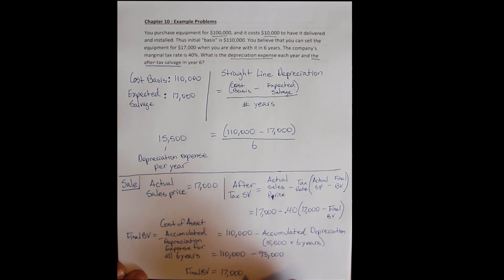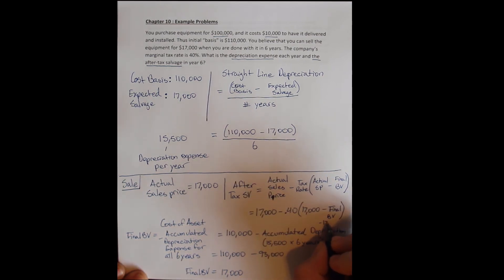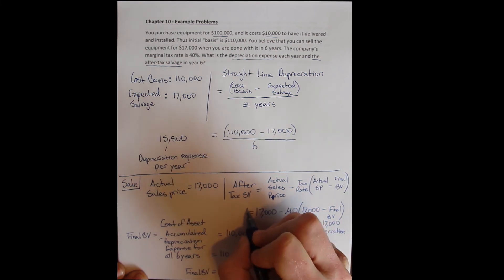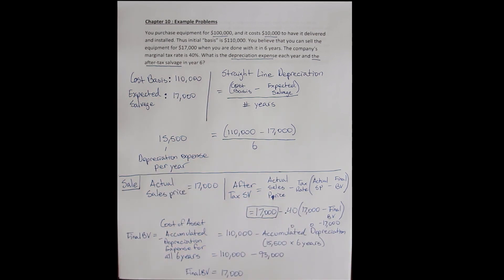So now I can come and plug that in here. Minus $17,000. This becomes zero. I pay no additional taxes. And my after-tax salvage value is simply the sales price.